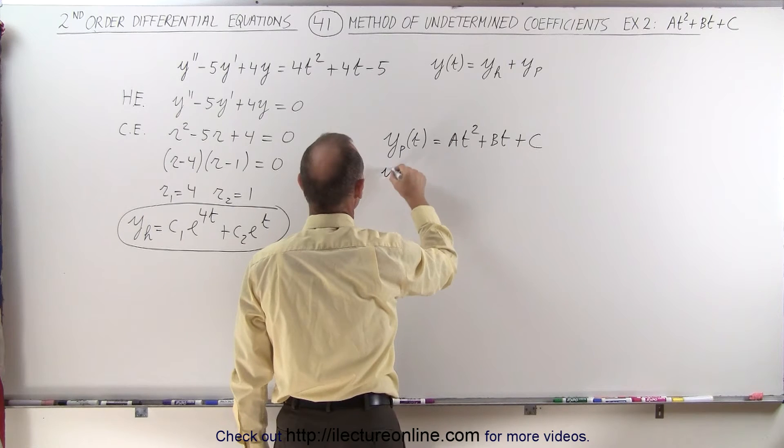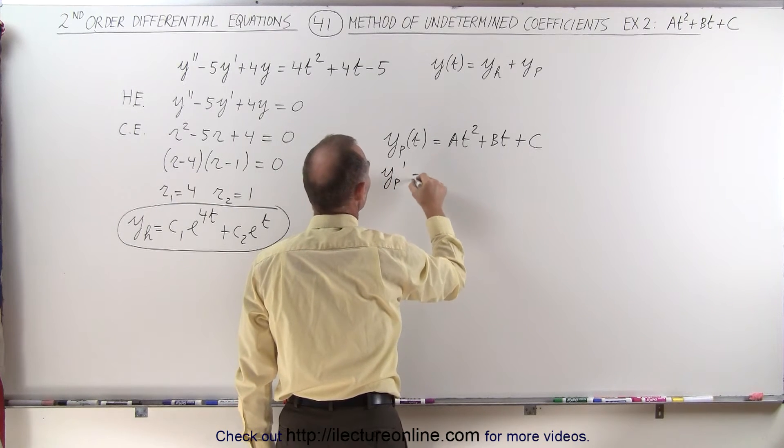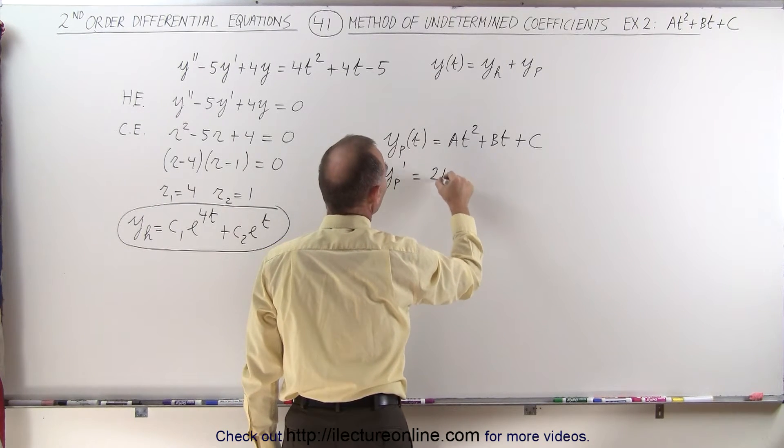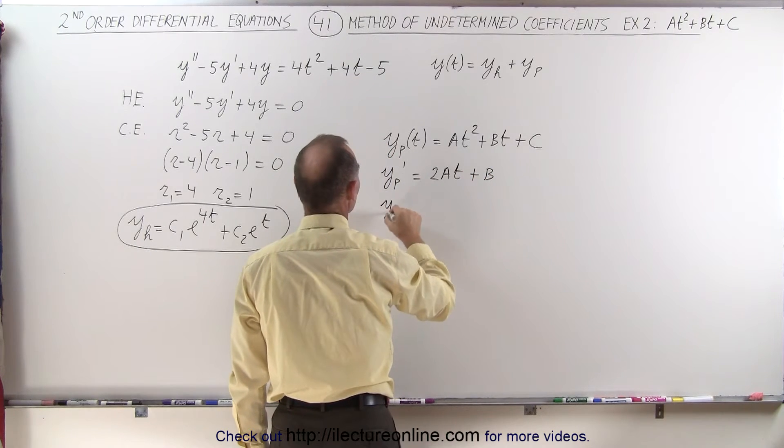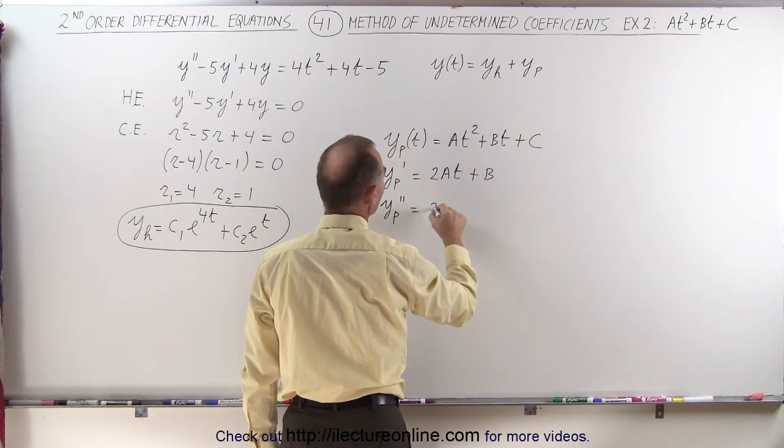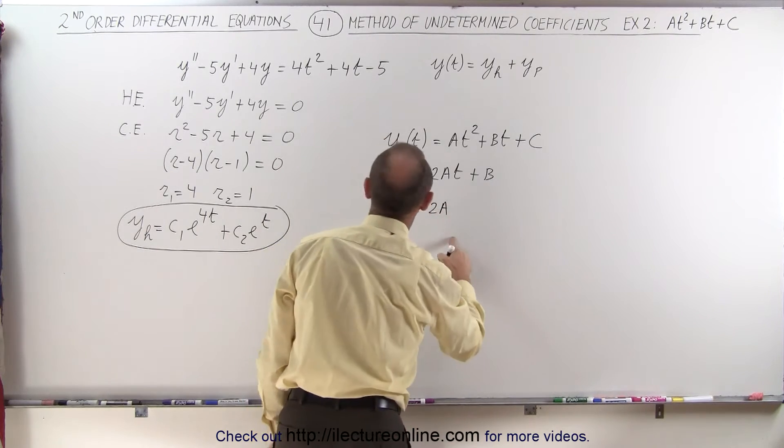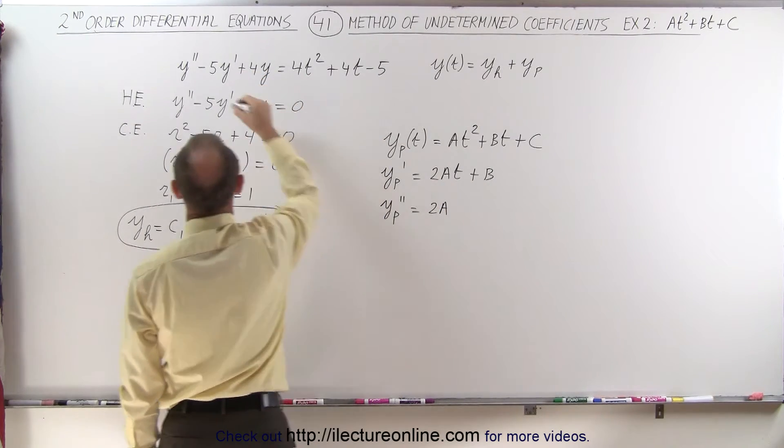When we find the first derivative that is equal to 2a times t plus b and the second derivative is going to be equal to simply 2a. We plug those back into the original equation.